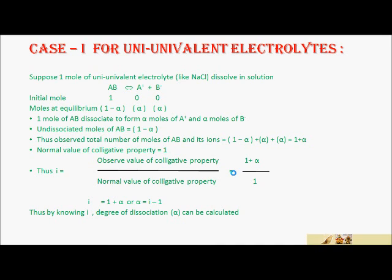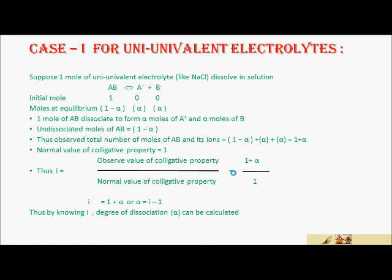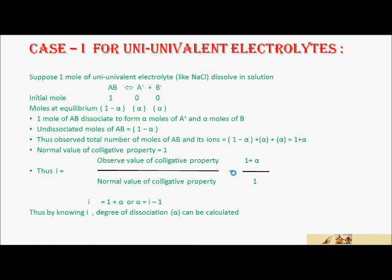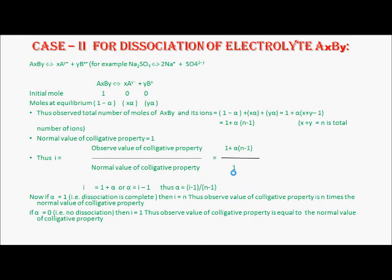The normal value of colligative property is equal to 1. Thus, the Van't Hoff factor i equals the observed value divided by the normal value, which gives i = (1 + α) / 1. By rearranging, we get alpha (α) = i − 1. So by knowing i, the degree of dissociation alpha can be calculated.